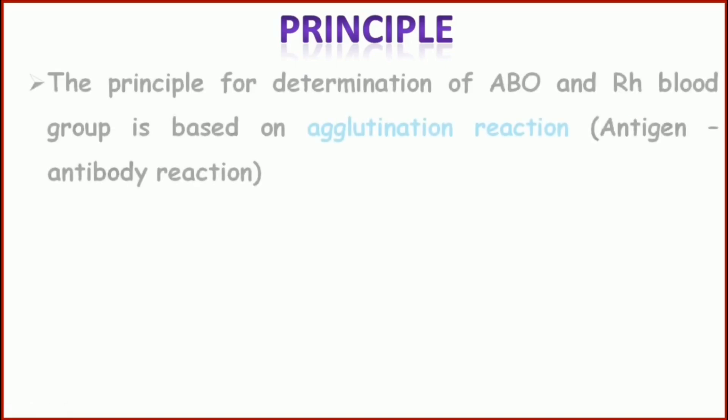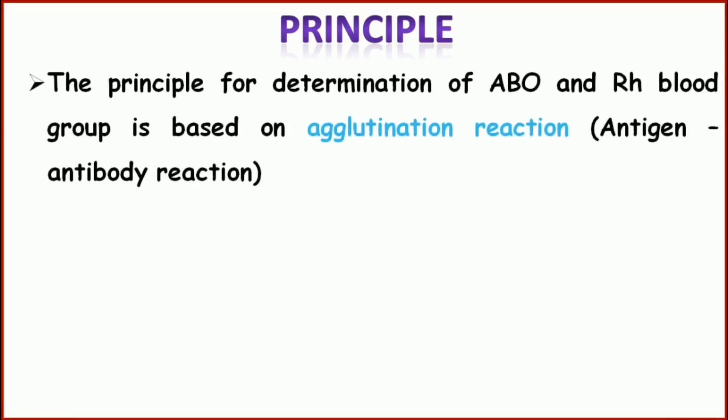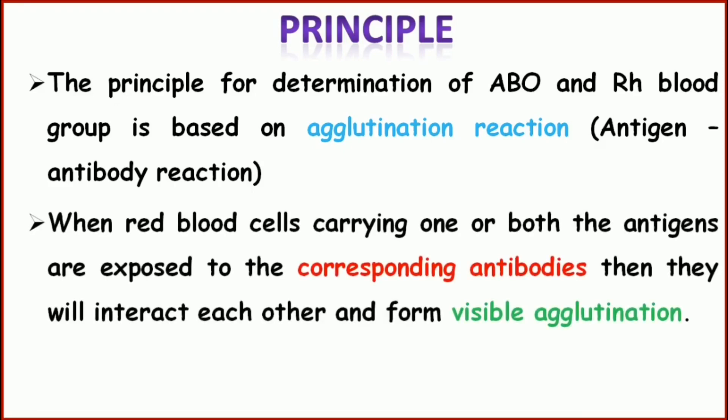The principle for determination of ABO and RH blood group is based on agglutination reaction, which is also known as antigen-antibody reaction, where antigen binds with each corresponding antibody. When red blood cells carrying one or both the antigens are exposed to the corresponding antibodies, they will interact with each other and form visible agglutination or clumping.